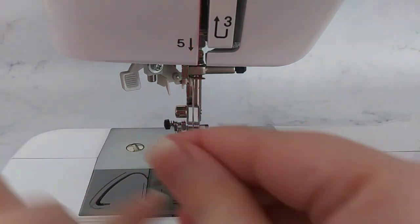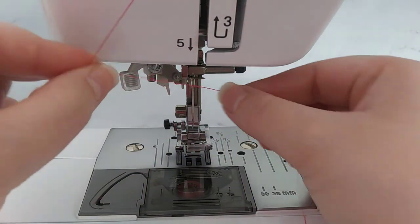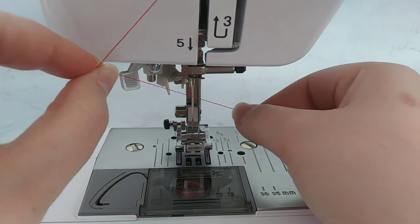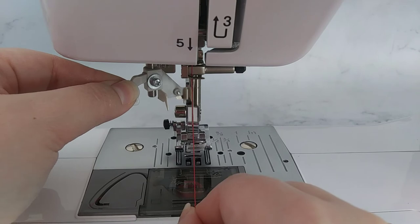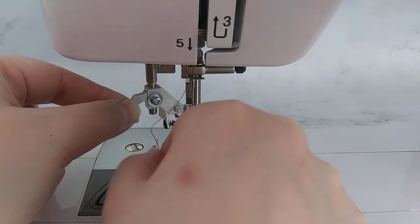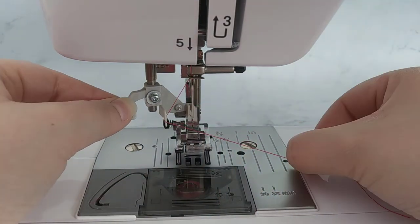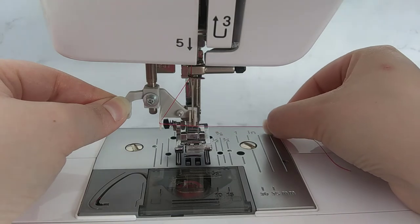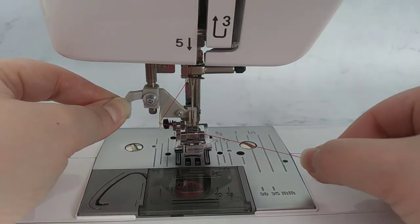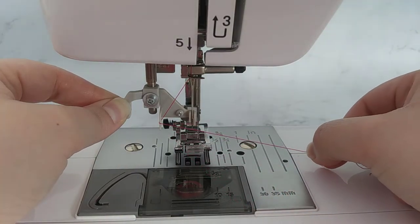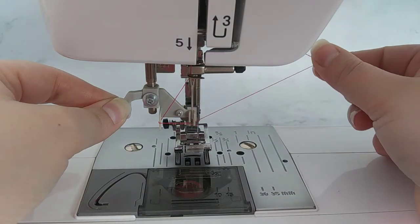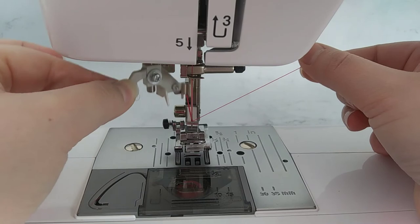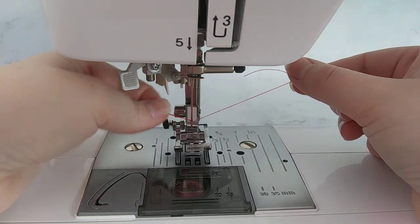But with this one, you just slide the thread under the hook back there, pull this down, wrap it around, push back, and then there's a little hook that goes through the eye of the needle that you just hook your thread on, and pull through, and there you have it.